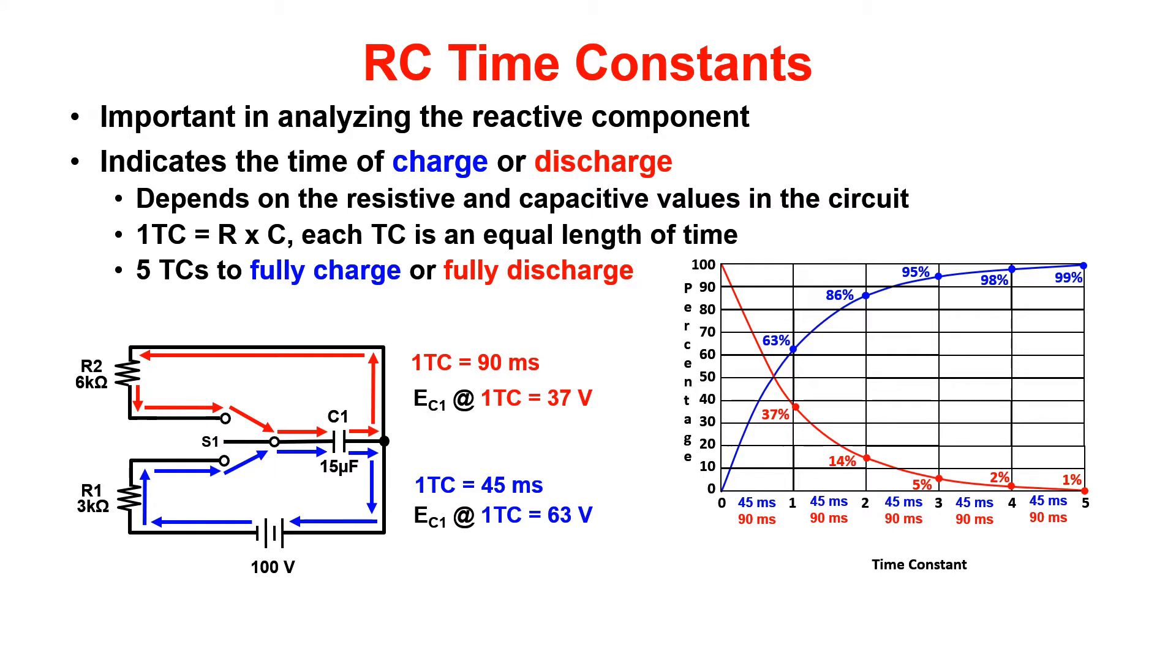Notice that the level of charge indicated at the first TC is 63%. An example question could be, what is the level of charge on C1 at the first time constant? To find this, we would do applied voltage times the value at the first time constant, and that'll give you the level of charge.